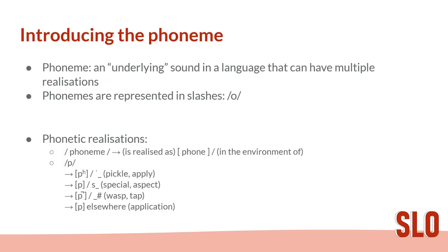Here I would like to introduce the concept of the phoneme as a companion to the phone. A phoneme is an underlying sound in a language that can have multiple phonetic realizations, and phonemes are represented in slashes — for example, the phoneme /p/. Phonetic realizations are different ways of saying the same phoneme. The phoneme exists in the mind; the phone exists in the mouth. The link is made explicit in writing using the following format: you put the phoneme in slashes, followed by an arrow meaning 'is realized as', followed by the specific phone in square brackets, then another slash meaning 'in the environment of'.